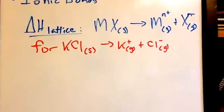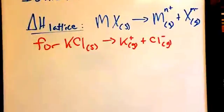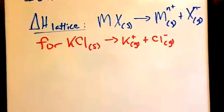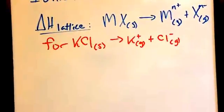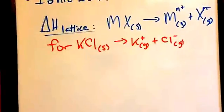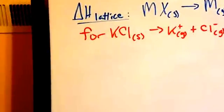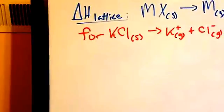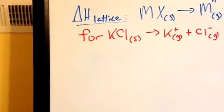Okay, so here we see the equation for lattice energy. Generically, from your book, we see MX(s) goes to M^n+(g), cation, plus X^n-(g), anion. Now, if we look at KCl, potassium chloride solid going to K+(g) and Cl-(g), that's essentially what we have there.